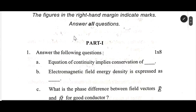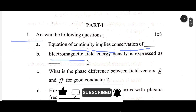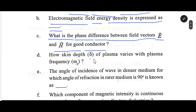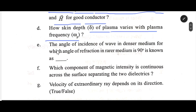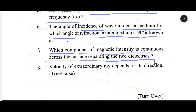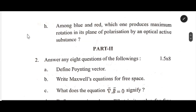Core 13 Physics, sixth semester. Number one: Equation of continuity implies conservation of — (dash). Electromagnetic field energy density is expressed as — (dash). What is the phase difference between field vectors E and H for a good conductor? How does skin depth of plasma vary with plasma frequency? The angle of incidence of a wave in a denser medium for which the angle of refraction in a rarer medium is 90 degrees is known as — (dash). Among blue and red light, which one produces maximum radiation in its plane of polarization by an optically active substance?